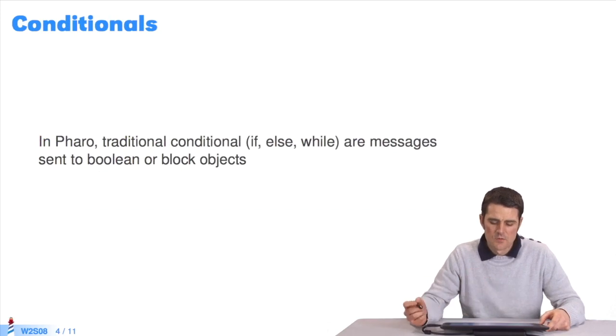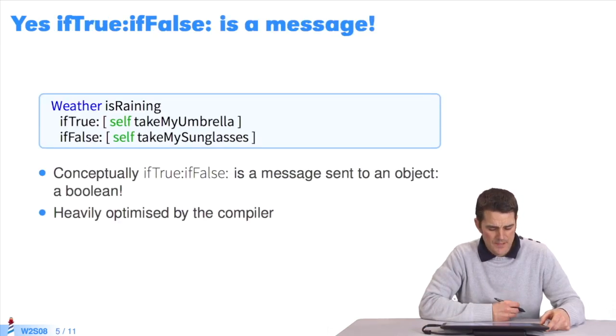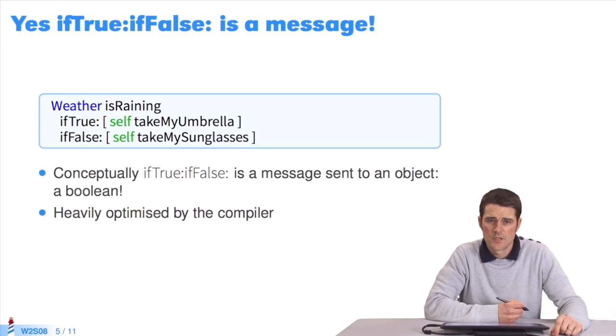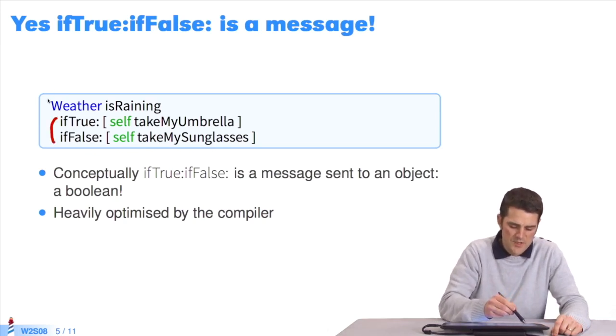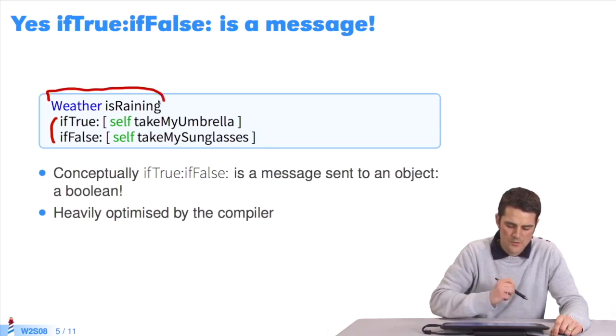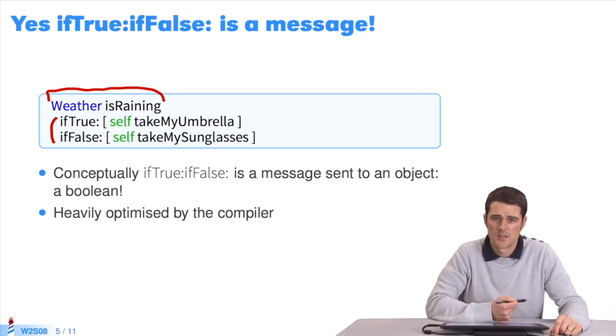In Pharo, conditionals like if, while, etc., are always messages sent to Booleans or blocks. Let's take the message ifTrue:ifFalse:, the typical alternative of any programming language. But in Pharo, it's actually a message sent to a Boolean object. I pass two blocks as parameters of this message. One block is evaluated if the receiver Boolean is true, the other if the receiver is false.